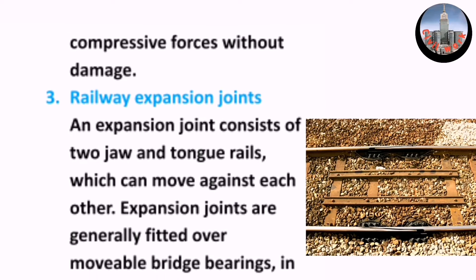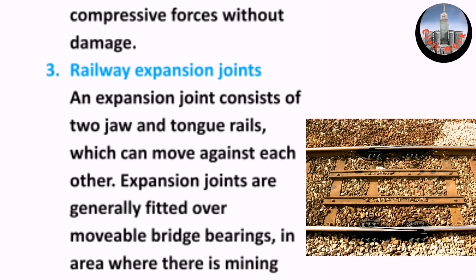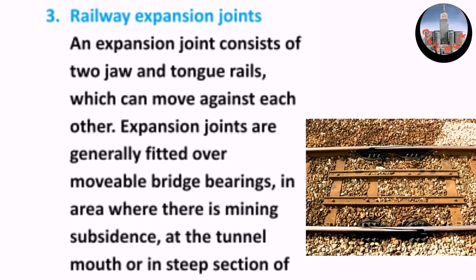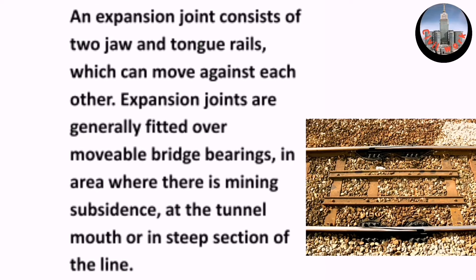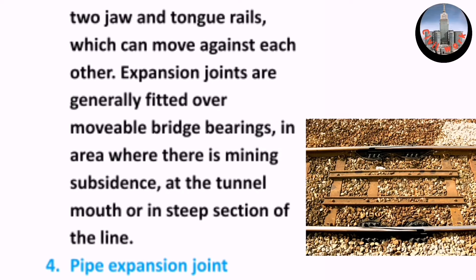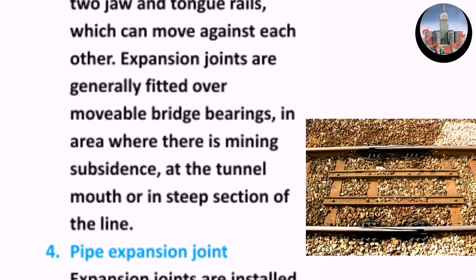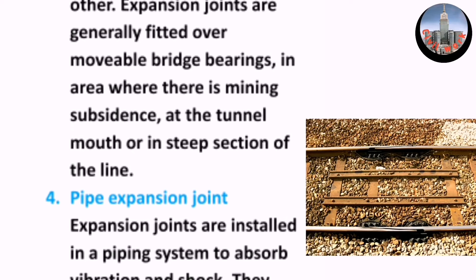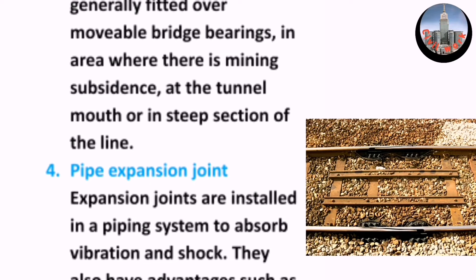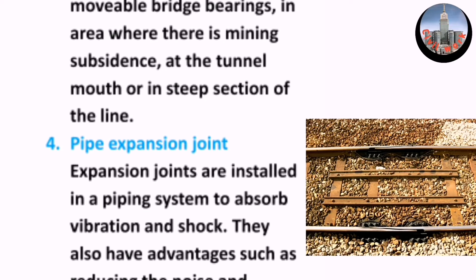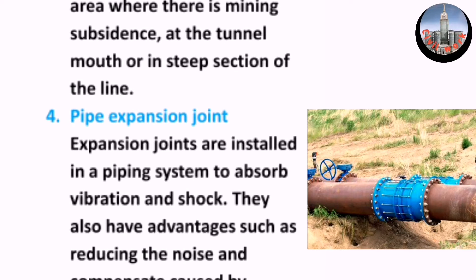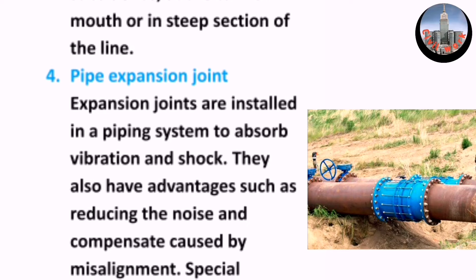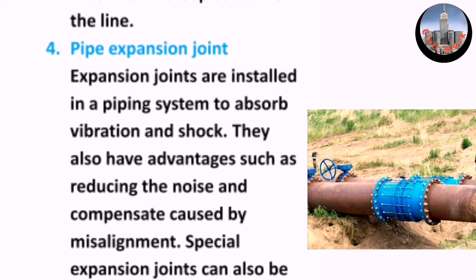Three, railway expansion joints — a railway expansion joint consists of two jaw and tongue rails which can move against each other. Expansion joints are generally fitted over movable bridge bearings in areas where there is mining subsidence, at the tunnel mouth, or in steep sections of the line.